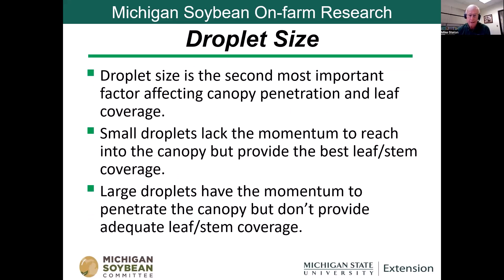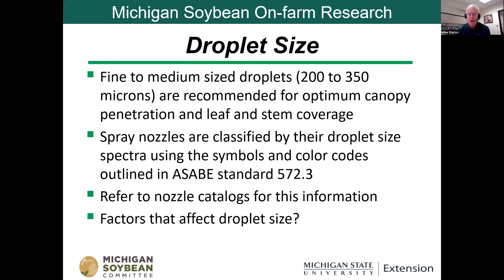Droplet size is the second most important factor, and it's one I think is overlooked a lot. We need good penetration and good coverage. If the droplets are too small, they'll give us excellent coverage but won't be able to penetrate the canopy. If the droplets are too large, they'll have the momentum to get into the canopy but won't cover the leaf or stem surface adequately. Fine to medium-sized droplets are best — 200 to 350 microns are recommended for optimum penetration and coverage. Engineers and spray companies classify droplet size using symbols and color codes outlined by a standard developed by the Agricultural Society of Ag and Biological Engineers.